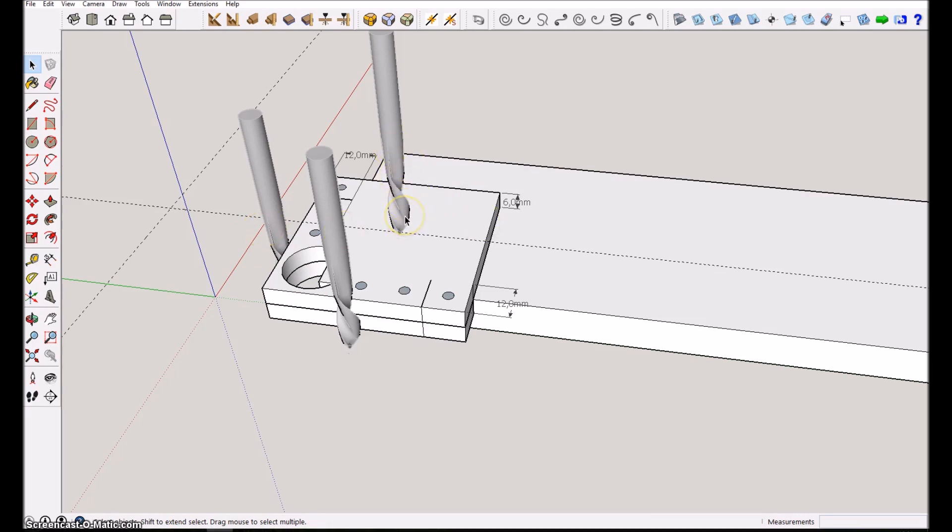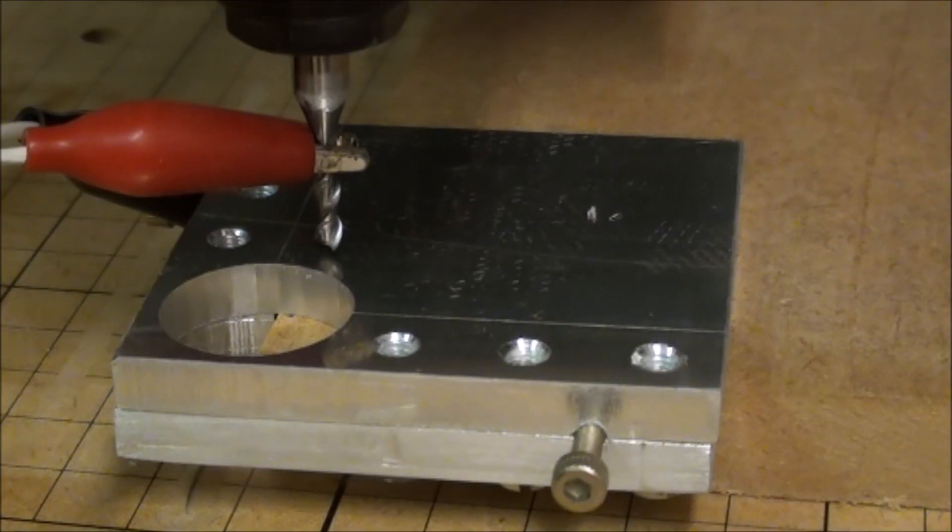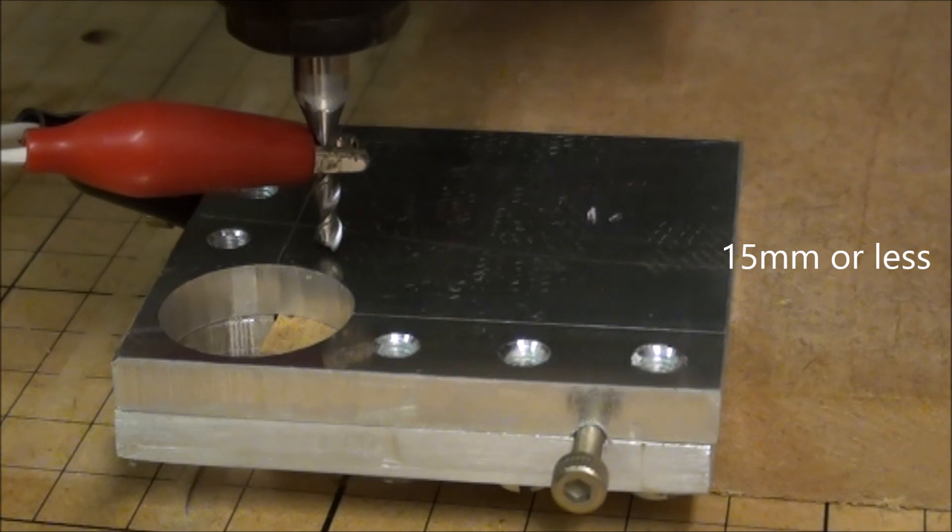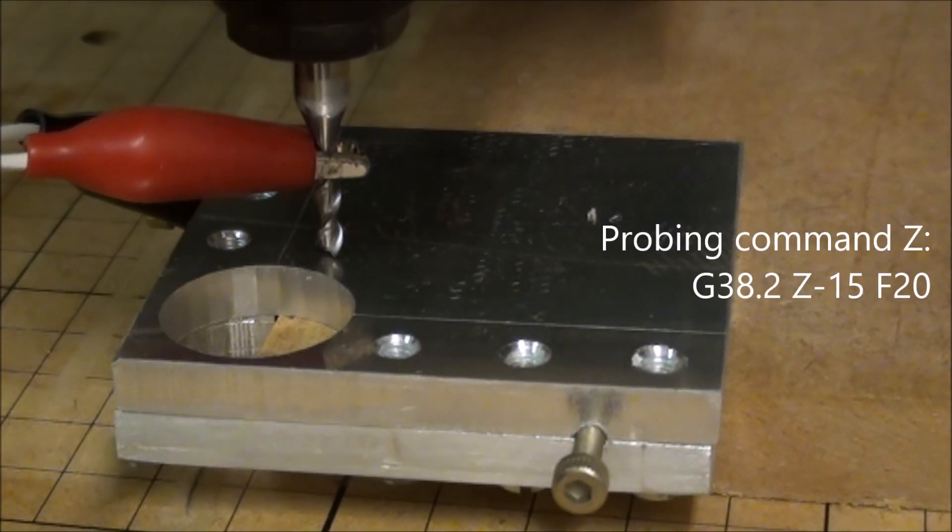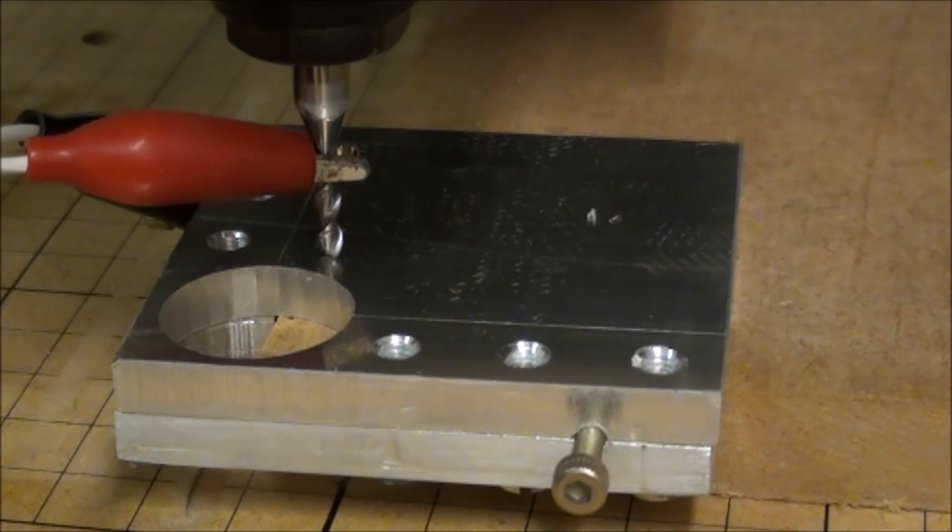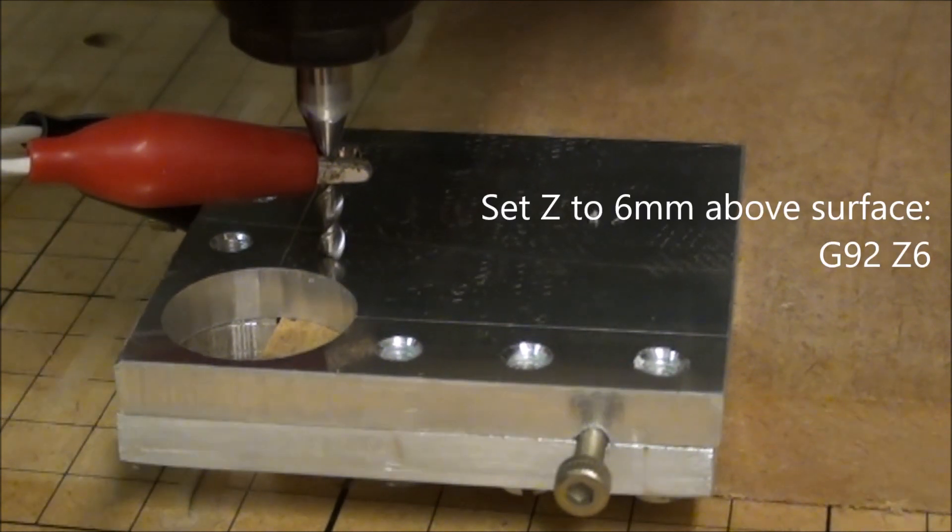So with the bit very close to the surface, I will issue the probing command. All right, and then I will set the z-height to be six millimeter above zero using the G92 command.